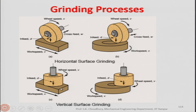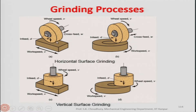Now let us see what kinds of grinding processes exist in practice. If the axis of the grinding wheel is horizontal — like in the case of a milling operation — it is called horizontal grinding. Since horizontal grinding is used for making a flat surface, it is called horizontal surface grinding.